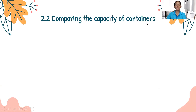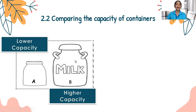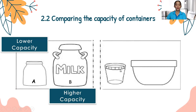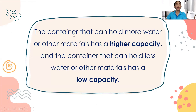Next, comparing the capacity of containers. We have container A and container B. Container A has a lower capacity and container B has a higher capacity. The container that can hold more water or other materials has a higher capacity, and the container that can hold less has a lower capacity. If the container is big, it has a higher capacity; if the container is small, it has a lower capacity.